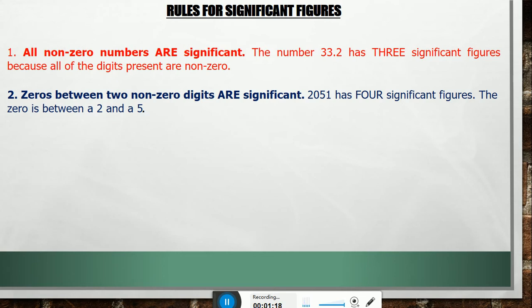Rule 2: Zeros between two non-zero digits are significant. For example, 2051 has four significant figures. The zero between 2 and 5 is also a significant figure.